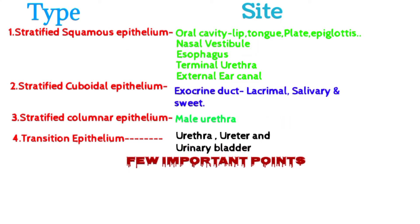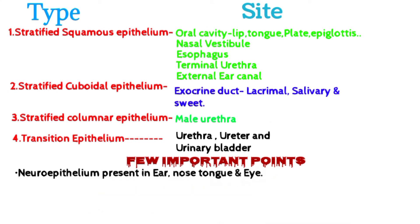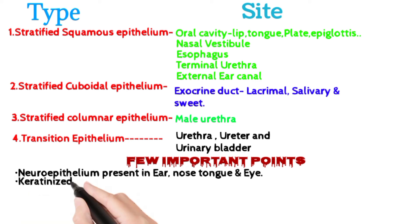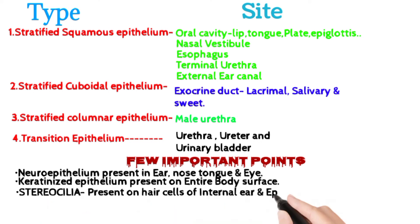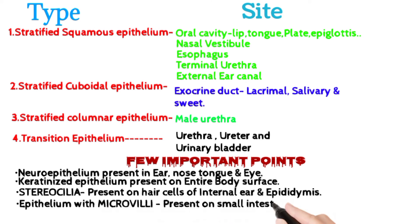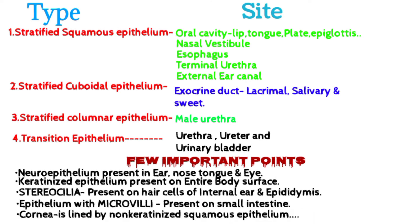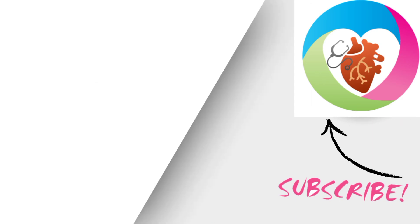A few important points: neuroepithelium is a sensory epithelium present in the ear, nose, tongue, and eye. Keratinized epithelium is present on the entire body surface. Stereocilia are present on hair cells of the internal ear and epididymis. Epithelium with microvilli is present in the small intestine. The cornea is lined by non-keratinized squamous epithelium.